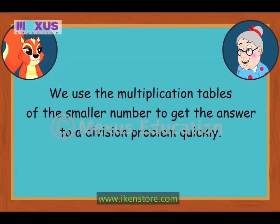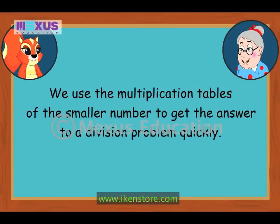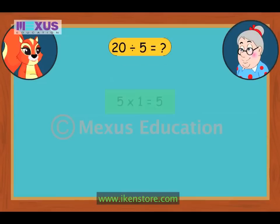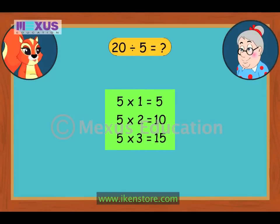We use the multiplication tables of the smaller number to get the answer to a division problem quickly. Here, 5 is the smaller number. So can you say the multiplication tables for 5? Sure! 5 ones are 5, 5 twos are 10, 5 threes are 15, 5 fours are 20.